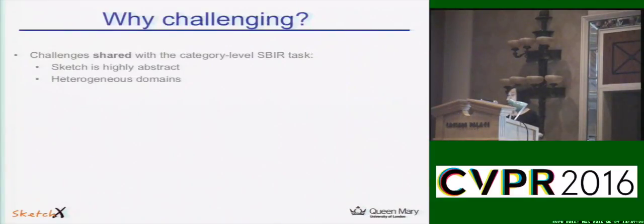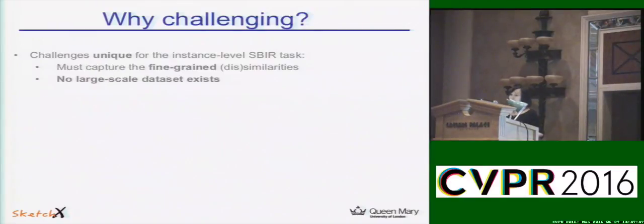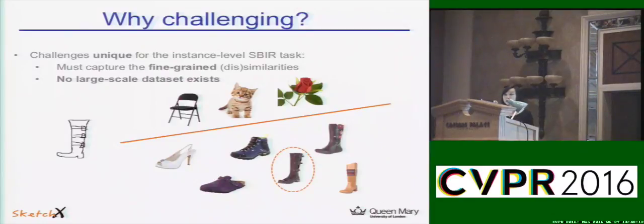In our research, we need to overcome the following challenges. First, sketch is highly abstract. Second, photos have colors while sketches only contain a white background and black lines, creating a big domain gap between the two types of images. These challenges are shared by all SBIR work. However, for fine-grained instance-level SBIR it becomes more challenging, because the model must capture fine-grained details. For example, it is not enough to distinguish shoes from other categories — it must distinguish that specific shoe from other shoes.